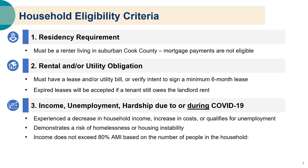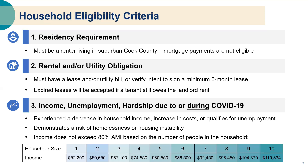Third, eligible applicants must demonstrate financial hardship during the COVID-19 pandemic. This could be a decrease in income, an increase in costs, or unemployment resulting in the risk of housing instability. In addition, an applicant's household income cannot exceed 80 percent of the average median income for the Cook County metro area. You can verify income eligibility using the below chart, which is also available on the Cook County ERA website.